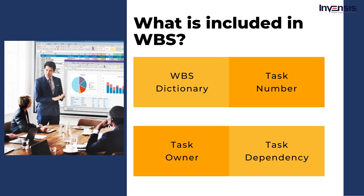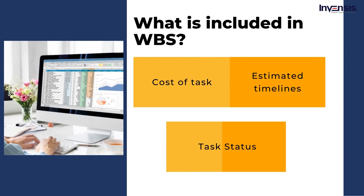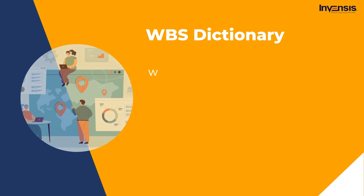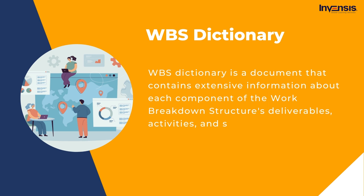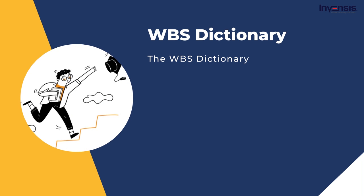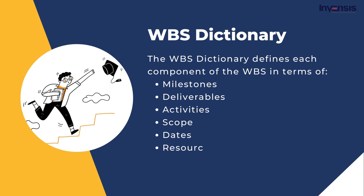WBS Dictionary is a document that contains extensive information about each component of the work breakdown structure's deliverables, activities, and schedule. The WBS Dictionary defines each component of the WBS in terms of milestones, deliverables, activities, scope, and on occasion dates, resources, expenses, and quality. The main purpose of the WBS Dictionary is to define the work in depth to assist in developing the product that will be received when the project is completed. Work packages are the work breakdown structure's most basic level, indicating the list of tasks that must be completed to finish a specific unit of work.